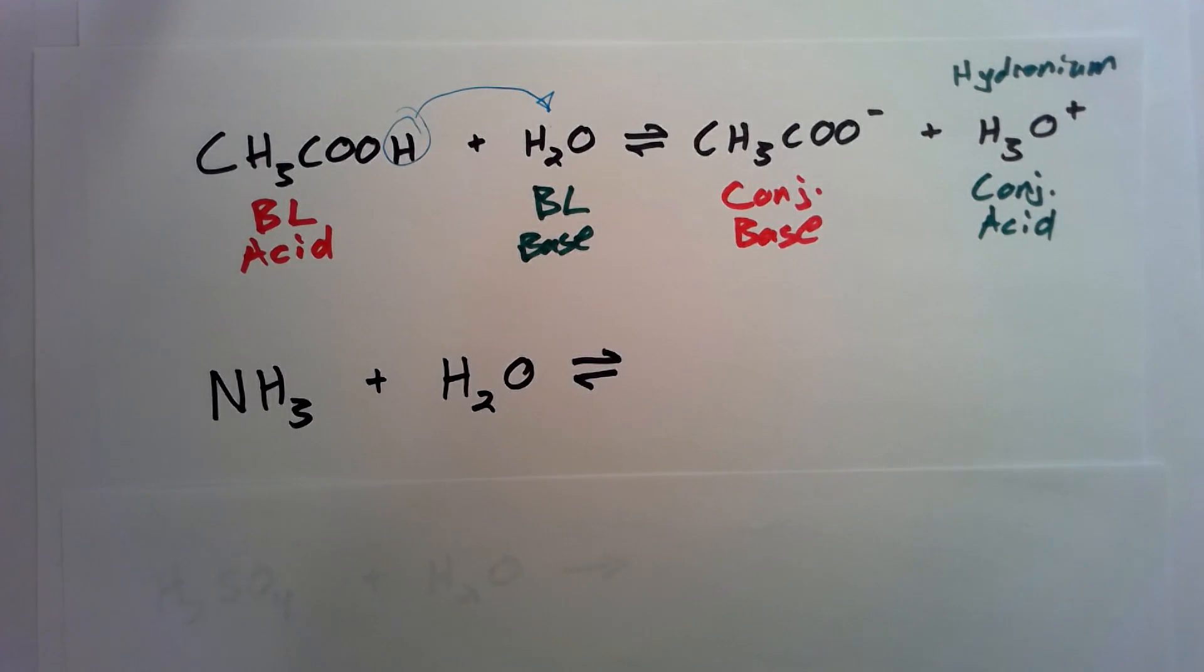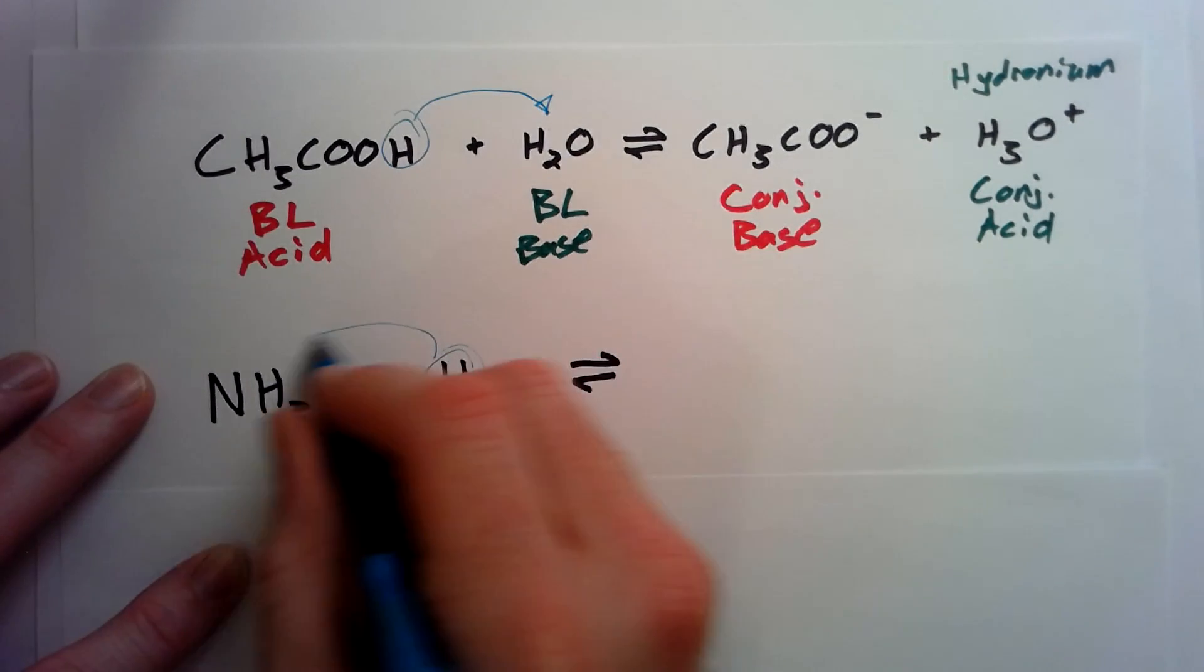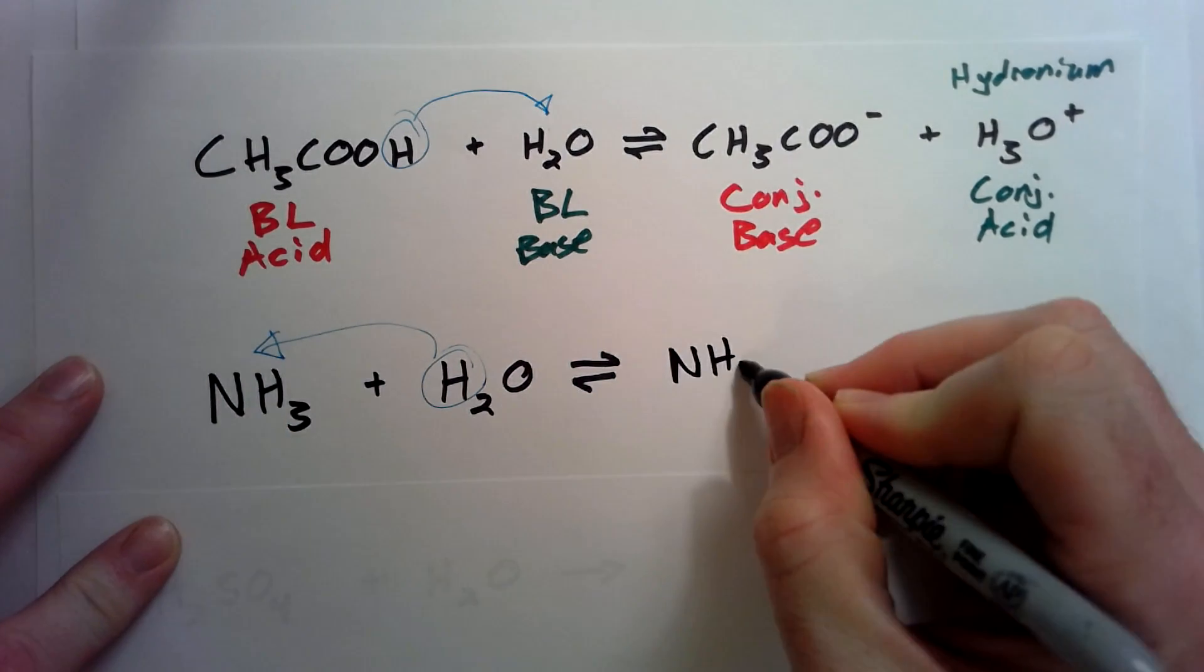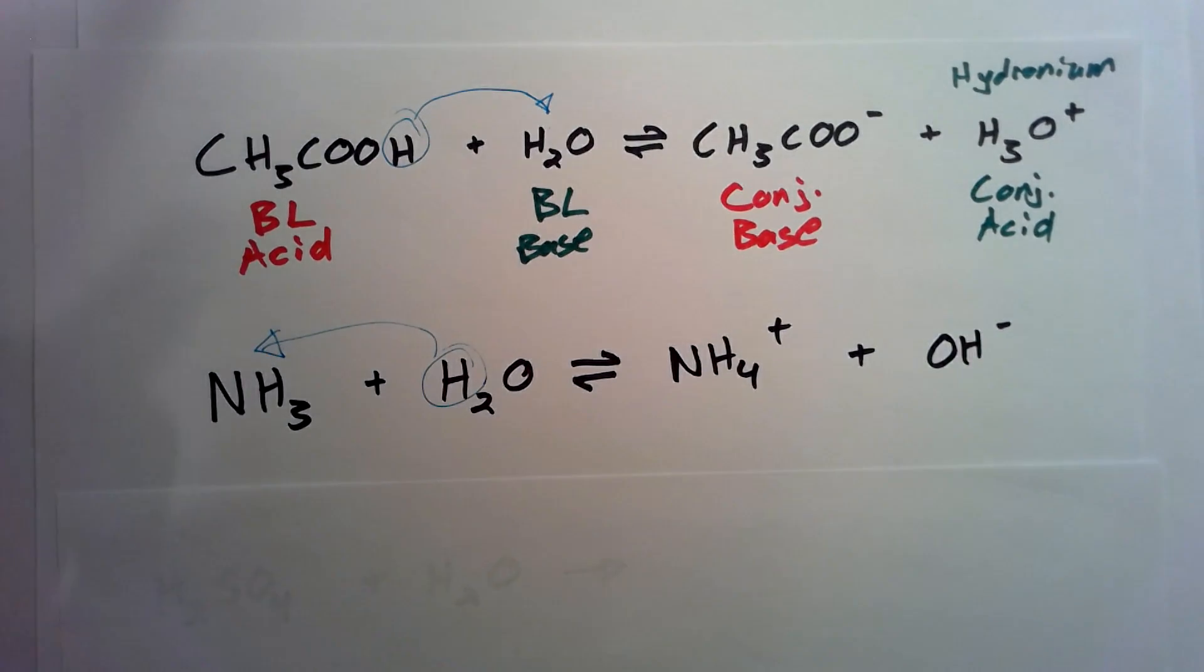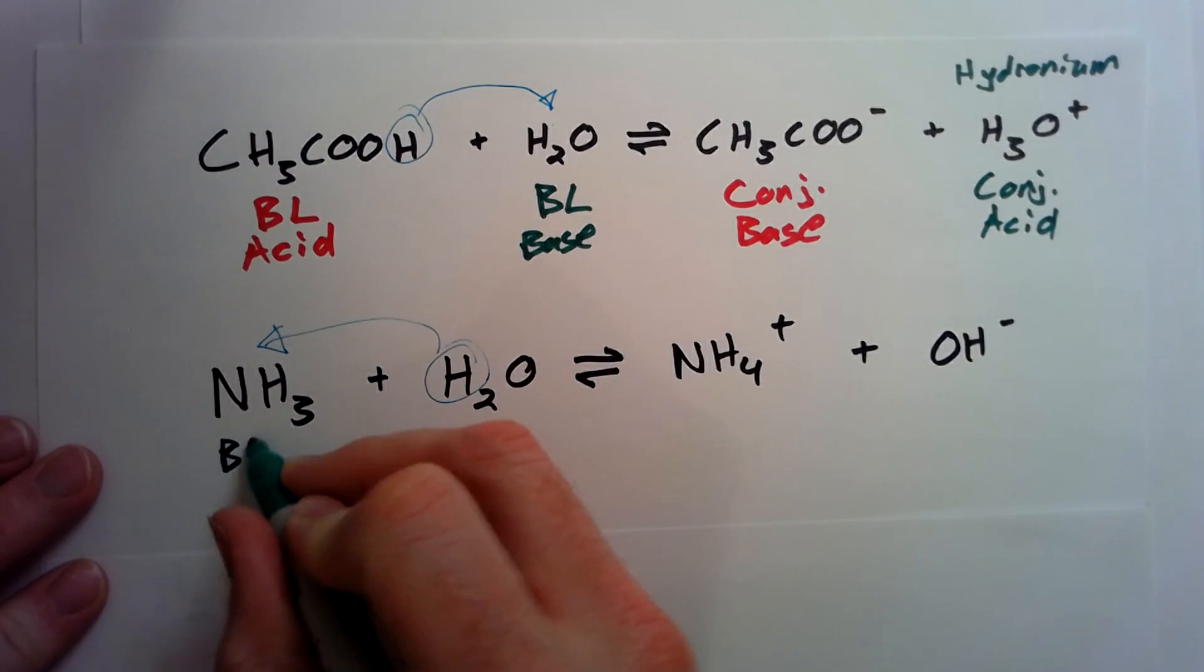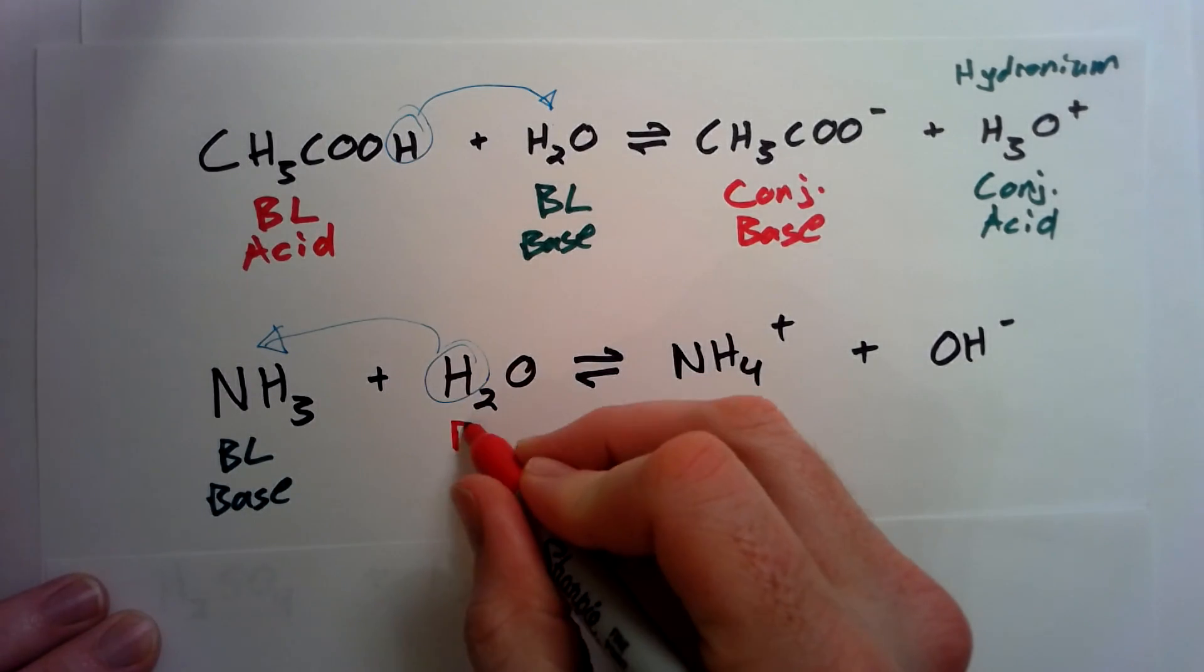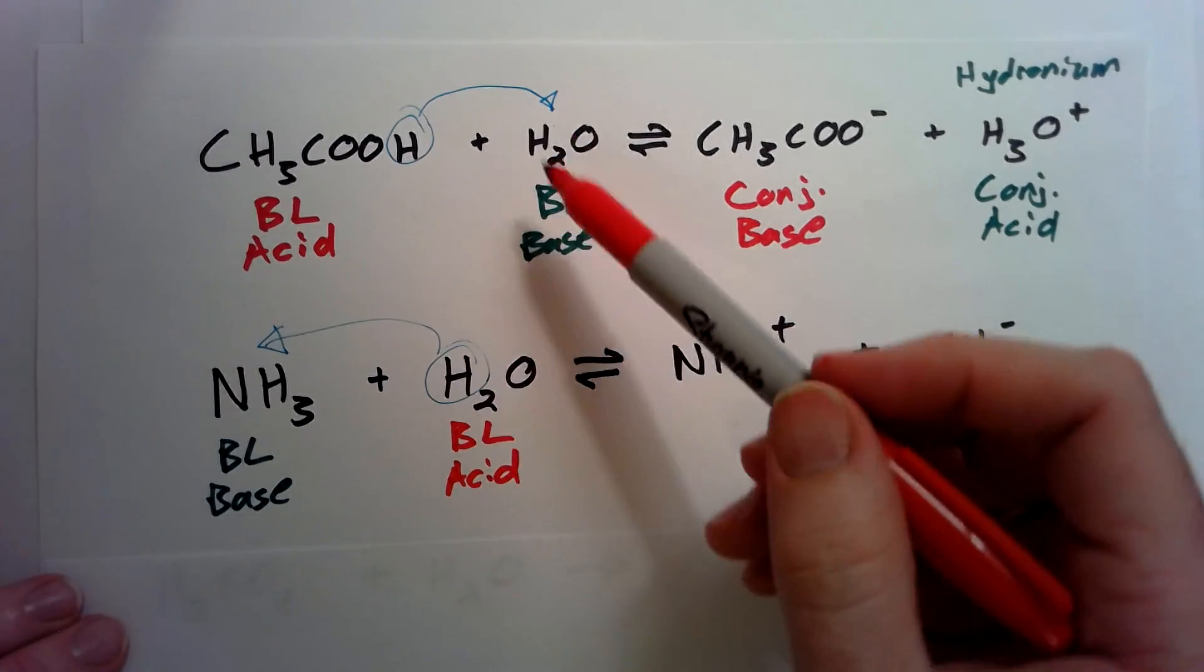So let's try another one. If we have NH3 and H2O, now what's going to happen is the hydrogen is going to give a proton to NH3. So we'll end up with NH4+ and OH-. The NH3 was our Bronsted-Lowry base, and the H2O was our Bronsted-Lowry acid. Remember I said water can act like an acid or a base. Well, here are two very good examples of that.